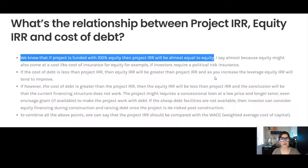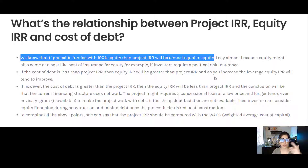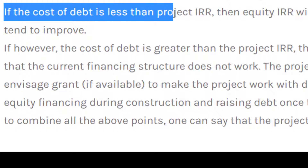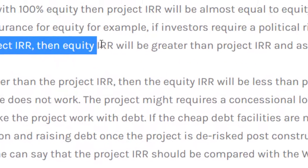I say 'almost equal' because there might be financing costs attached to equity funding. For example, if your project is in a risky country, investors may purchase insurance products like political risk insurance, which come at a cost. You need to remove that cost when calculating project IRR. But effectively, with 100% equity, project IRR ≈ equity IRR.